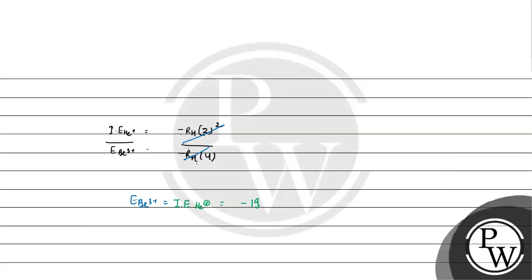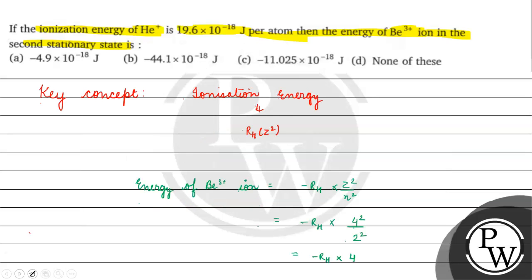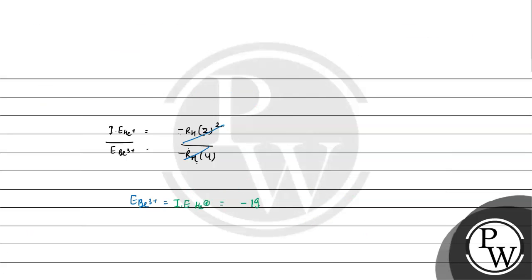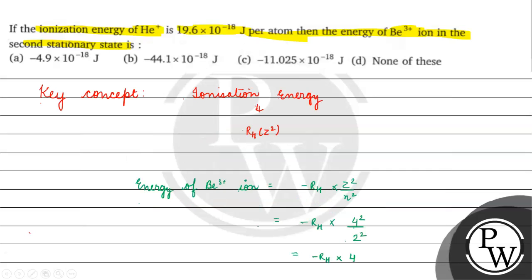Minus 19.6 into 10 to the power minus 18 joule per atom. Coming back to the question, the correct answer for this question will be option D. I hope you understood well. Thank you and all the best.